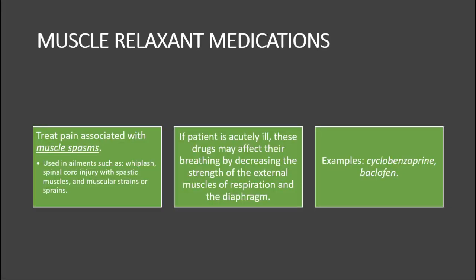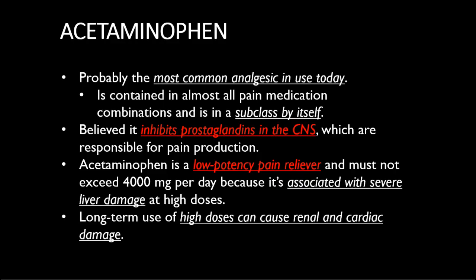Muscle relaxant medications treat pain associated with muscle spasms in conditions such as whiplash, spinal cord injury, or muscle strains. If a patient is acutely ill, these drugs may affect breathing by decreasing the strength of the external muscles of respiration, including the diaphragm. Acetaminophen is probably the most common analgesic in use today, contained in almost all pain medication combinations. It must not exceed 4,000 milligrams per day because it is associated with liver damage at high doses, and long-term high-dose use can cause renal and cardiac damage.